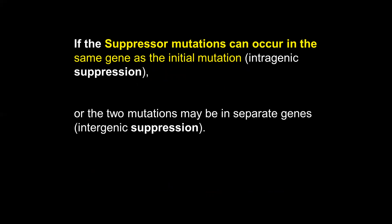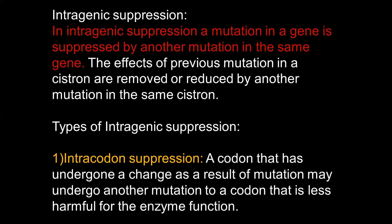If the suppressor mutation occurs in the same gene where the first mutation has taken place, we call it intragenic suppression. If the two mutations take place on different genes, we call it intergenic or extragenic suppression. In intragenic suppression, a mutation in a gene is suppressed by another mutation in the same gene, removing or reducing the effect of the previous mutation on the same cistron. Intragenic suppression may be divided into various types.